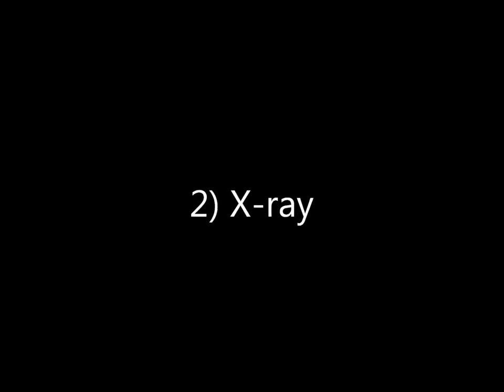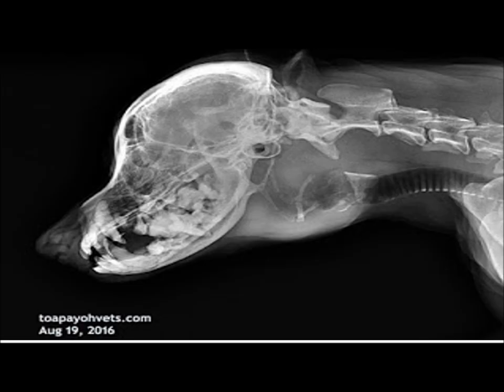We first take an x-ray of the Miniature Schnauzer, and it shows that the esophagus, barely visible, is constricted — which could explain its inability to eat. The trachea has also been pushed down, causing its panting and difficulty in breathing.